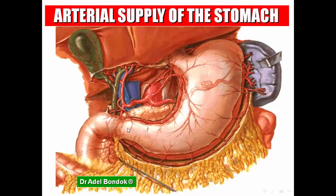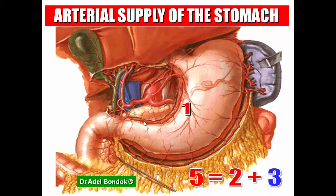The stomach is supplied by five arteries: two along the lesser curvature and three along the greater curvature. The two arteries along the lesser curvature are the left gastric artery and the right gastric artery. The three arteries along the greater curvature are the short gastric arteries, the left gastro-epiploic, and the right gastro-epiploic. The left gastric artery arises directly from the celiac artery; the right gastric from the hepatic artery; short gastric arteries from the splenic artery; left gastro-epiploic from the splenic artery; and right gastro-epiploic from the gastro-duodenal artery.